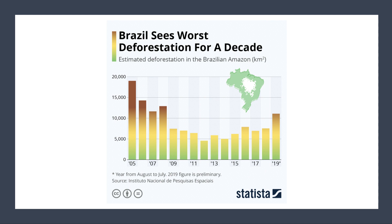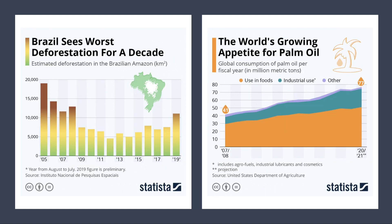Deforestation is another key threat, particularly in Indonesia and Brazil. Between August 2018 and July 2019, approximately 11,000 square kilometres — over 4,000 square miles — of rainforest were cut down in Brazil, a 10% increase, largely reversing the progress made in previous years under Bolsonaro's government. Deforestation is also partly driven by our growing appetite for palm oil — global production was about 73 million tons last year and is set to increase further, prompting an acceleration of land clearance.